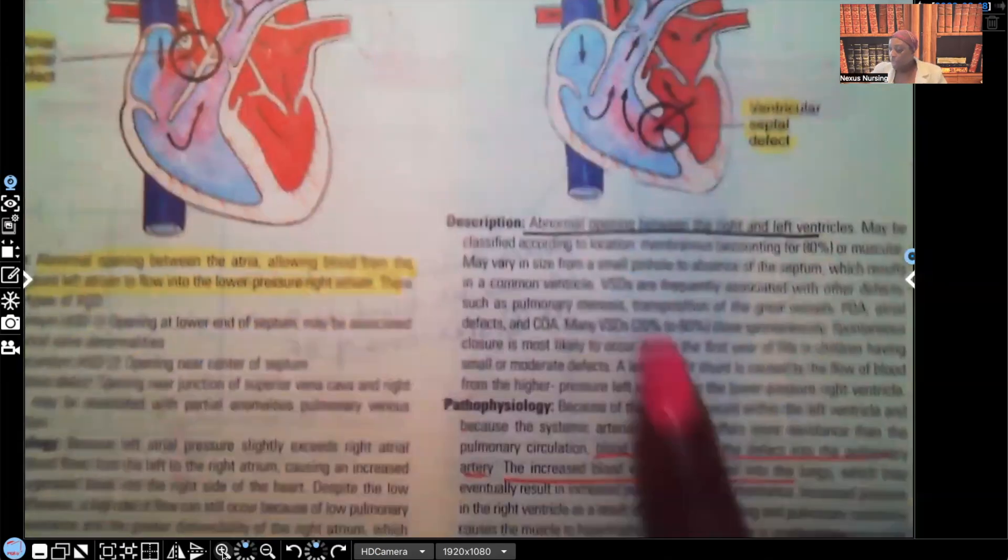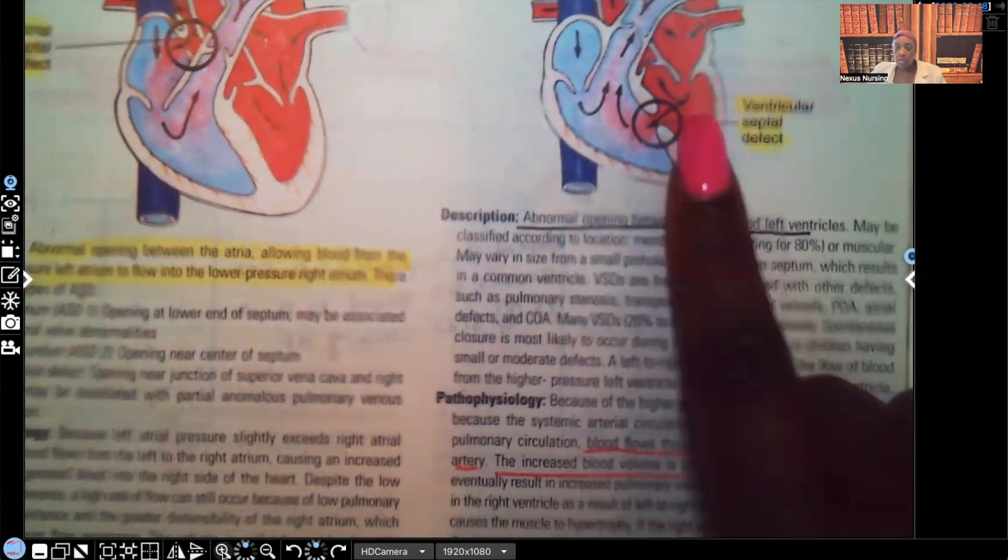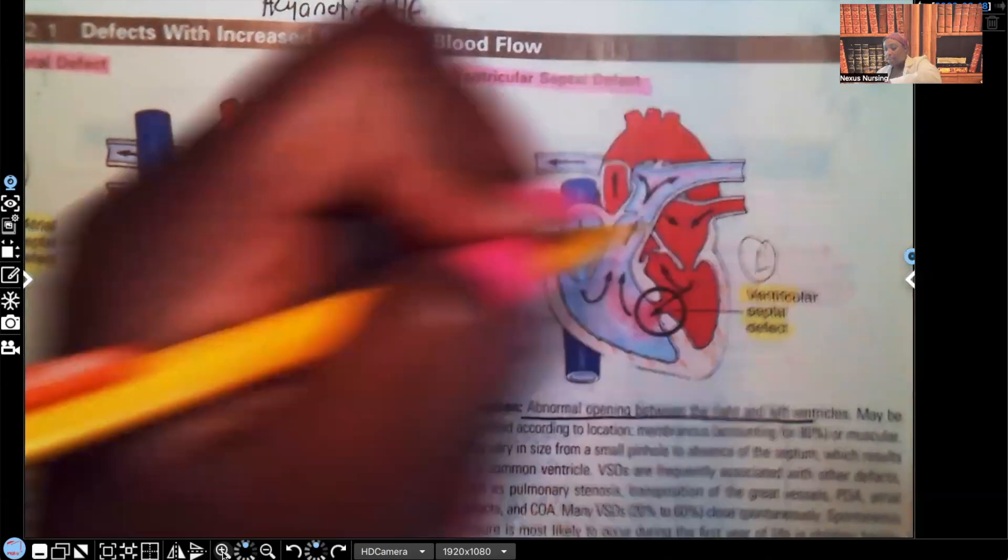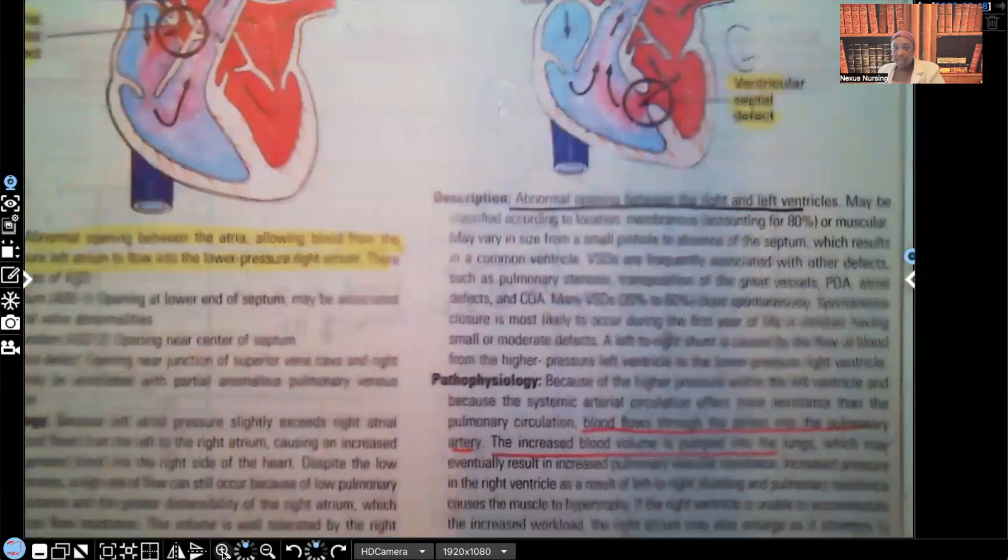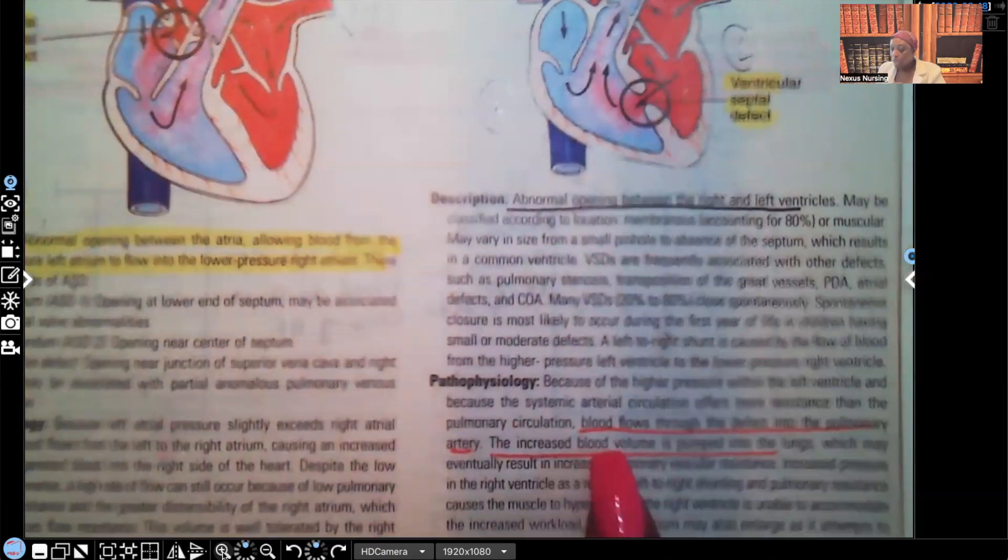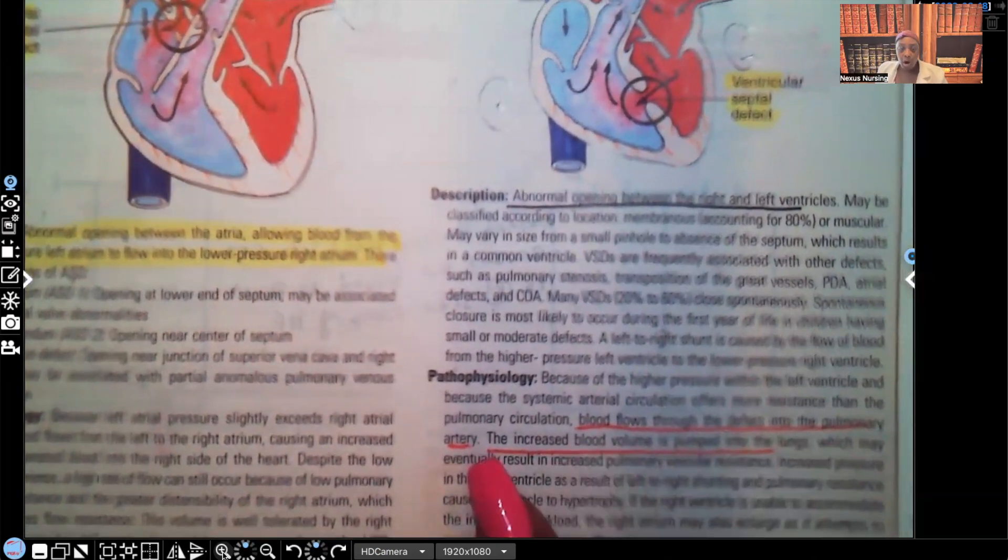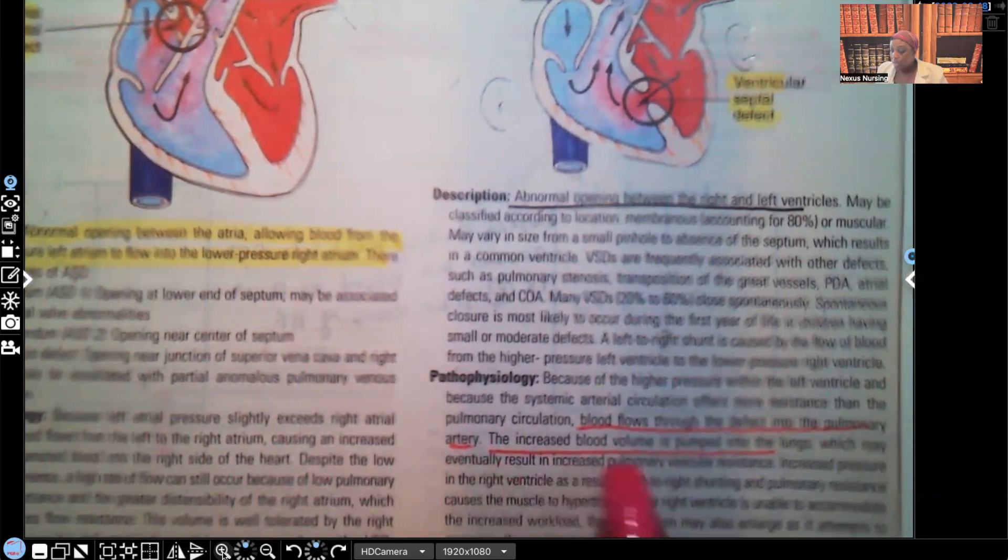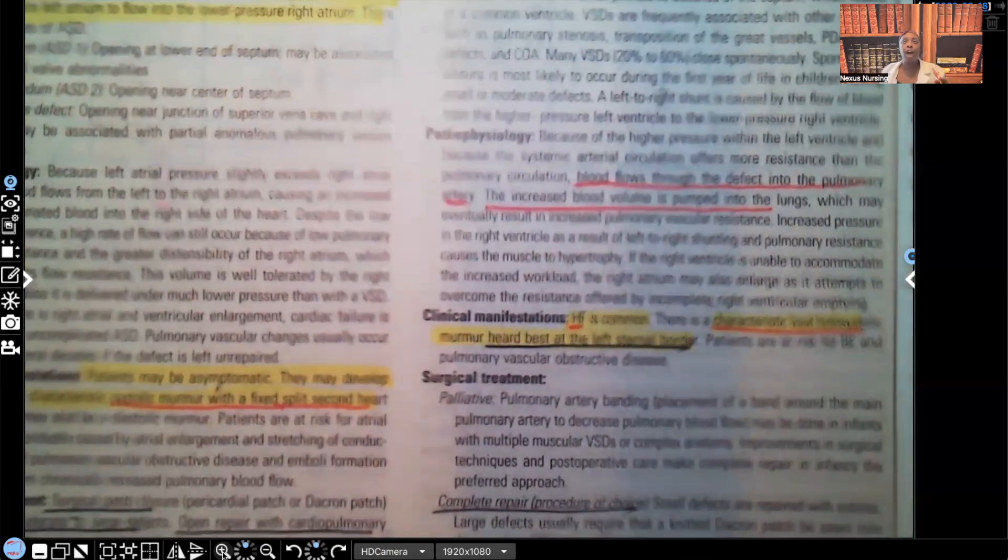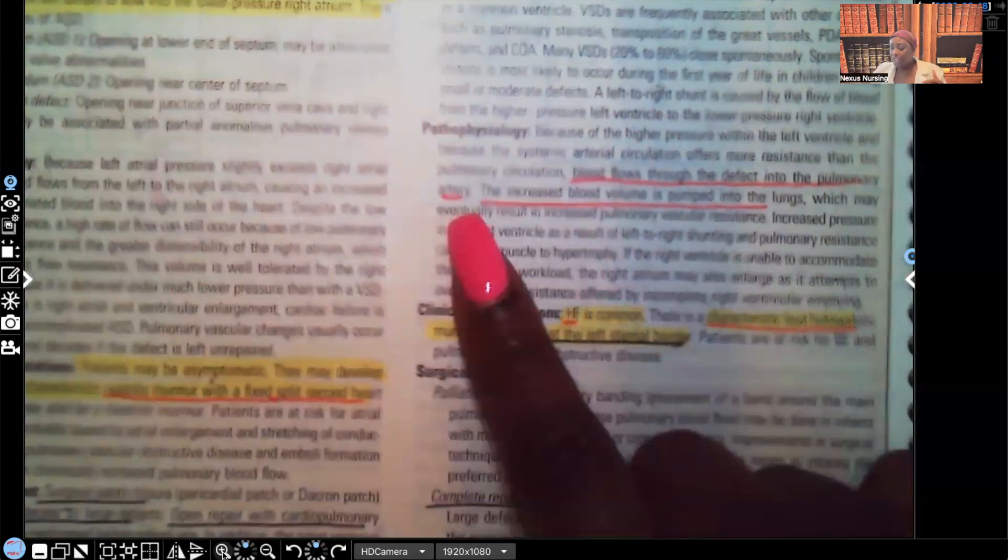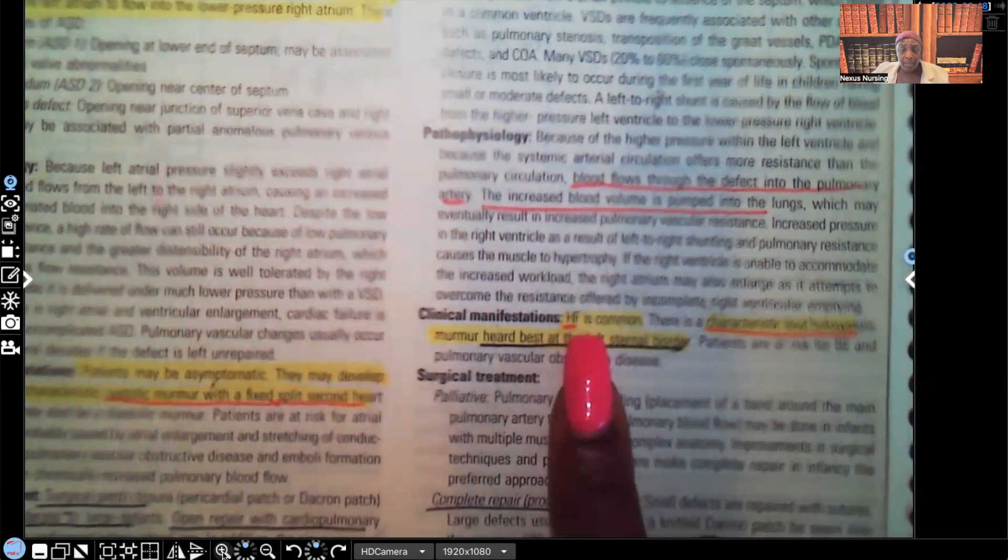Description: abnormal opening between the right and left ventricles. We see it right here. This is our left ventricle, this is our right ventricle. It's an abnormal opening right here. Pathophysiology: blood flows through the defect into the pulmonary artery. The increased blood volume is pumped into the lungs. Think about physiologically what's that doing to the heart and the lungs. We're expecting that patient to have symptoms of heart failure. Heart failure is common. Of course it is.